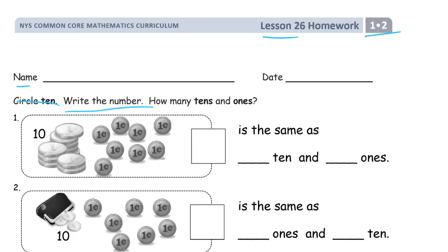So here we have 10. This is our 10 group here. And this is how many pennies? 1, 2, 3, 4, 5, 6, 7, 8. So it's 10, 8, it's 18.